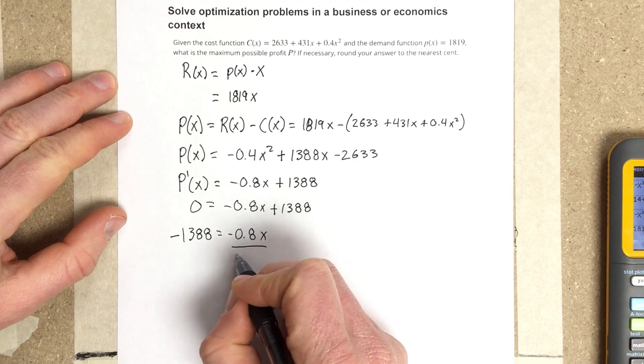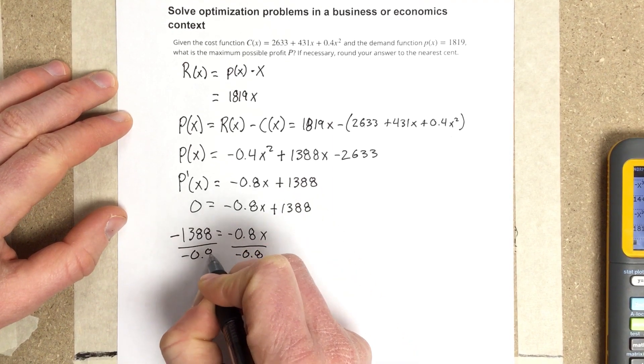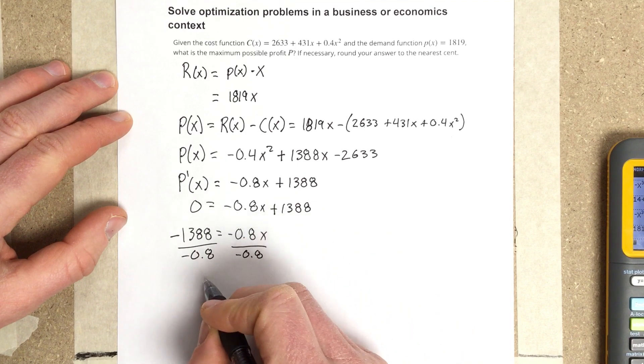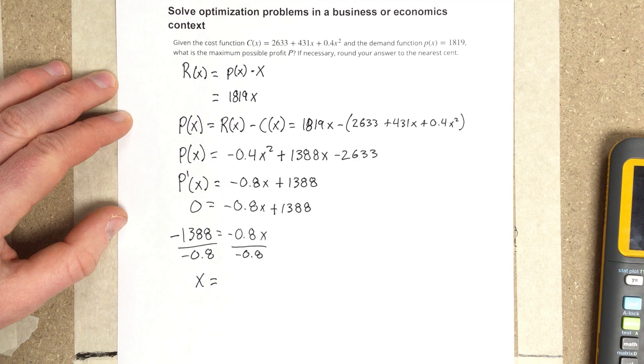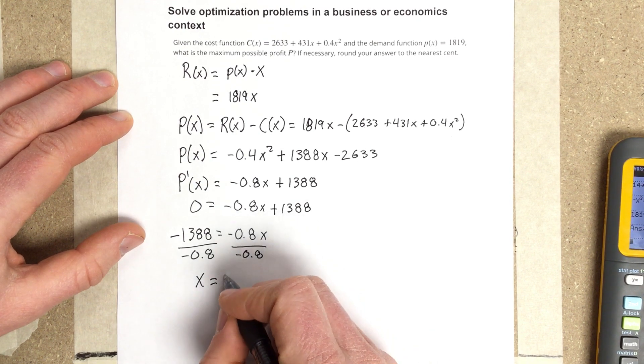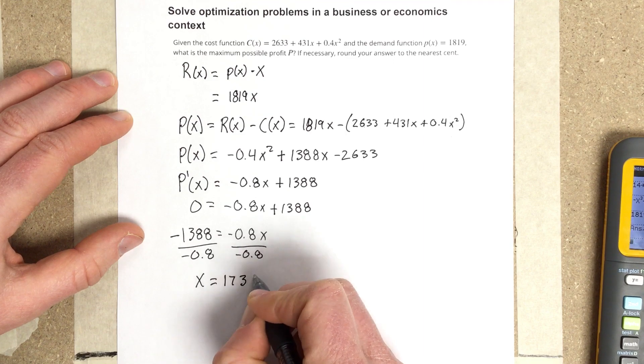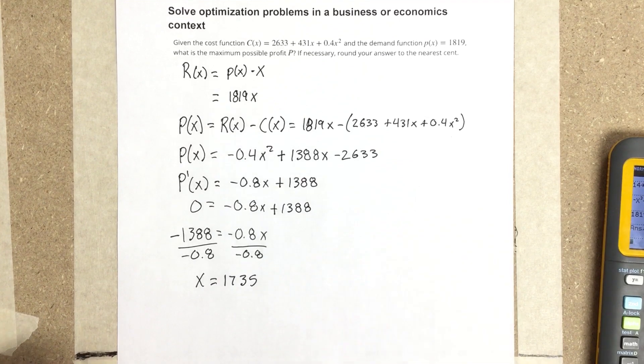Dividing both sides by -0.8: x = 1388 ÷ 0.8 = 1735. That's 1,735 items sold.